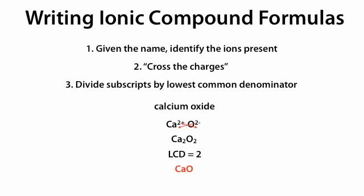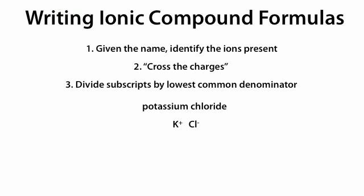Potassium chloride is made from K+ and Cl-. We cross the K+ charge next to the Cl- and cross the 1- charge next to the K, giving us K1Cl1. The lowest common denominator is 1, so this ends up as KCl.